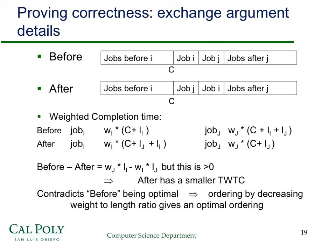So ordering by decreasing weight-to-length ratio must give the optimal ordering, because if the ordering is not that, then we can always do better. That's it — the proof is complete. This is worth studying, and for those who watched the previous video, there was a problem given there, and now you should be in good shape to attack that problem and prove the correctness of that particular algorithm.